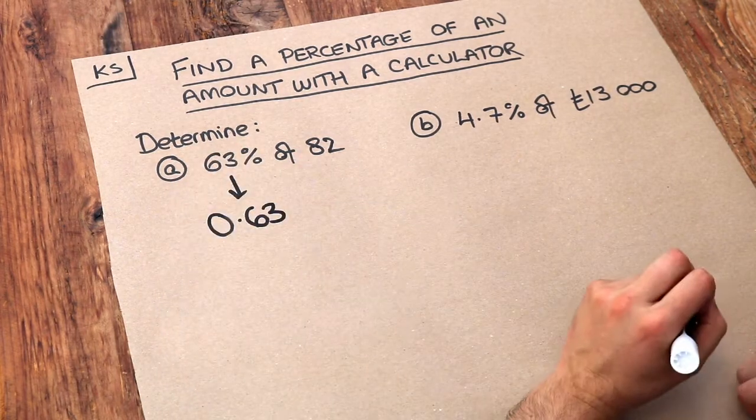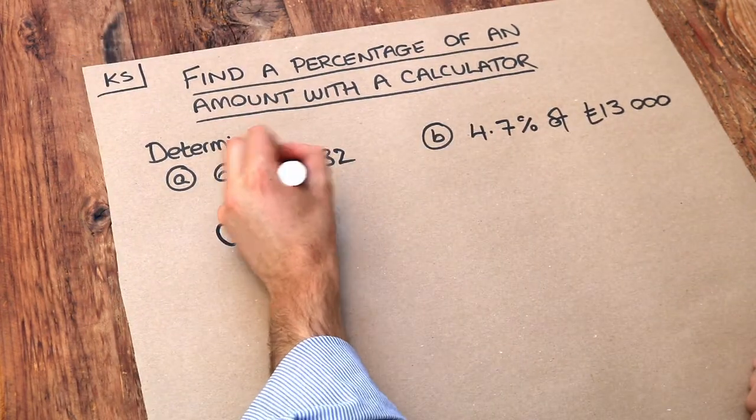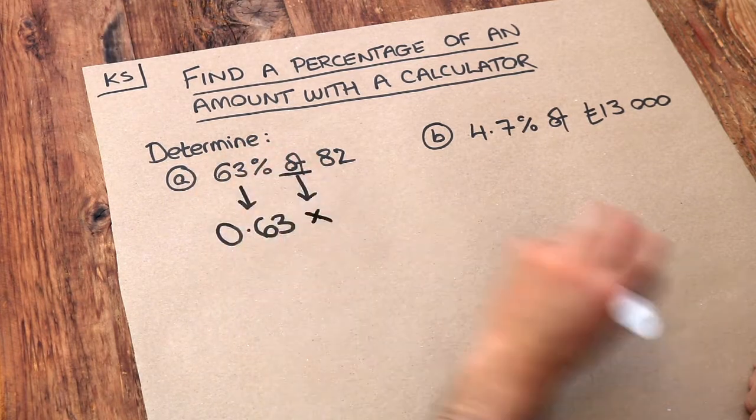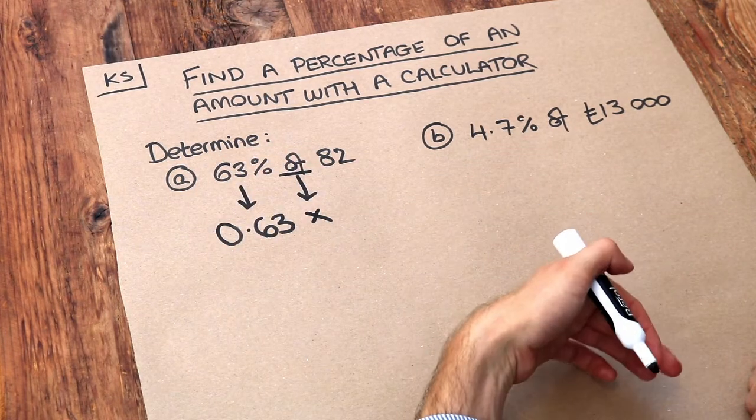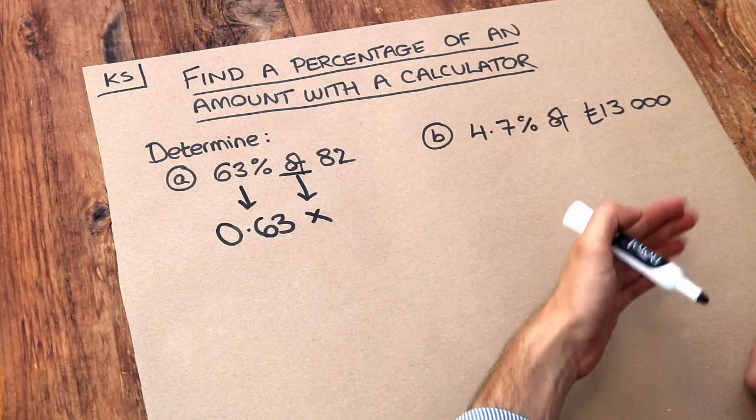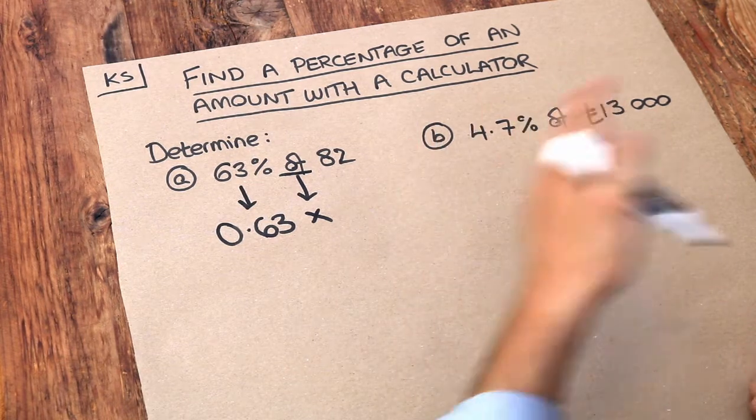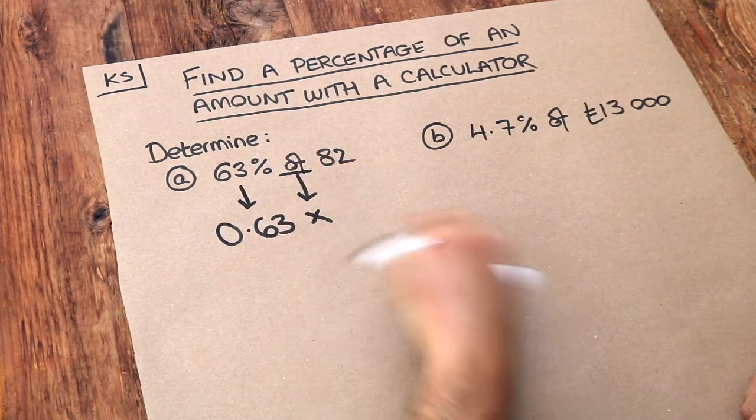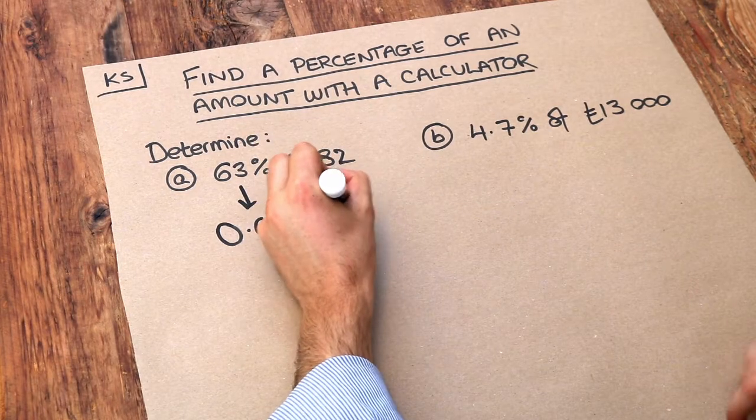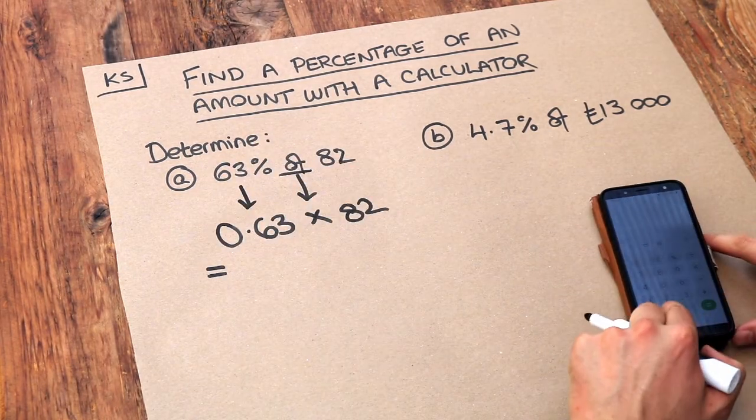So that's 63% as a decimal, and whenever you see the word "of" you can always replace that with times. So it's the same if you're finding a fraction of an amount. If I want to do a third of 12, I can do a third times 12. So just replace the word "of" with times, and then we've got 82, and then you just need to shove that into your calculator.